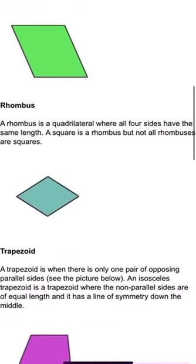A rhombus is a quadrilateral where all four sides have the same length. A square, for example, is a rhombus, but not all rhombuses are squares.